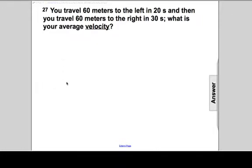All right, an additional problem. This one is two legs. In this journey, you go 60 meters to the left in 20 seconds and then travel 60 meters to the right in 30 seconds. What is the average velocity?